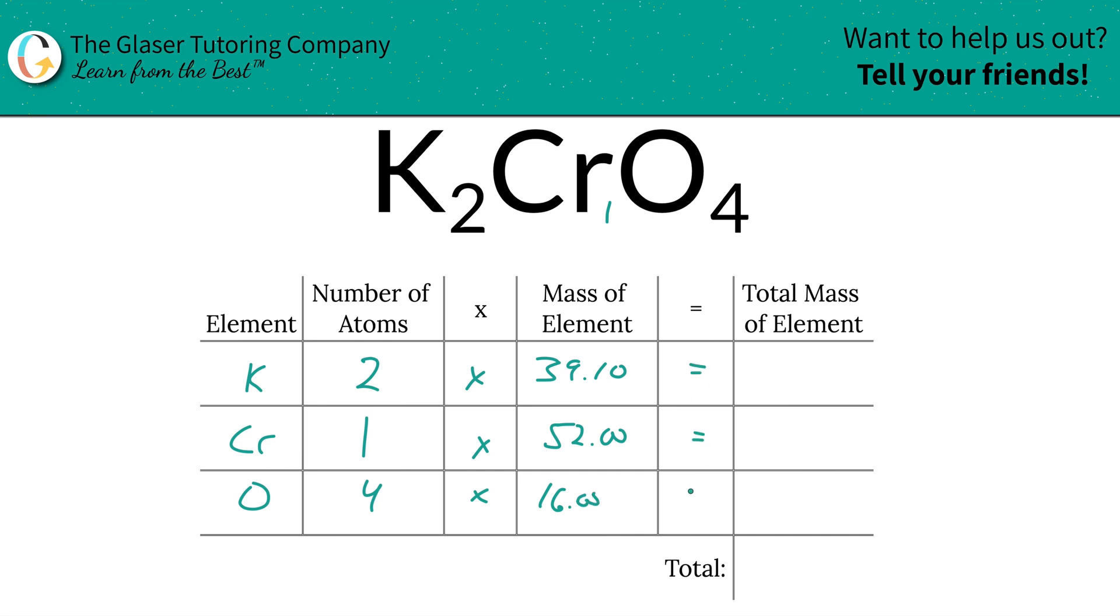And then to find the total mass of each element in the compound, we're simply going to multiply this row across. So that's going to be 78.20 for potassium. Chromium, 52.00, nice and easy. And then for oxygen, it's going to be 64.